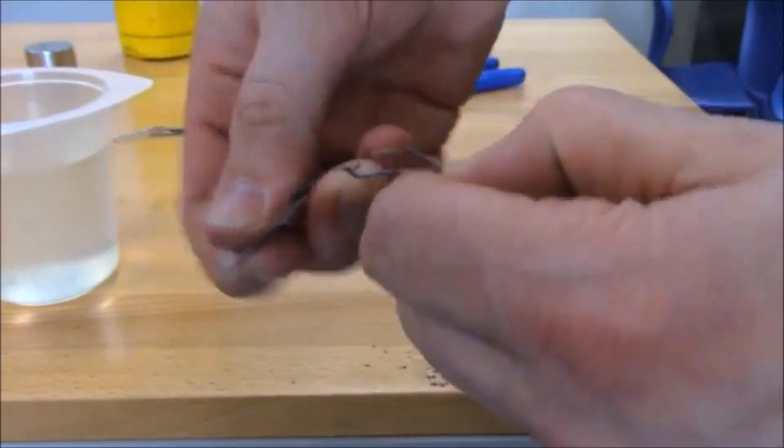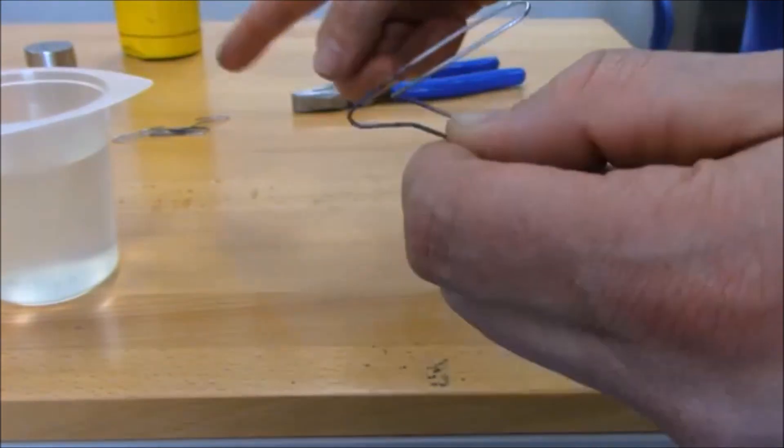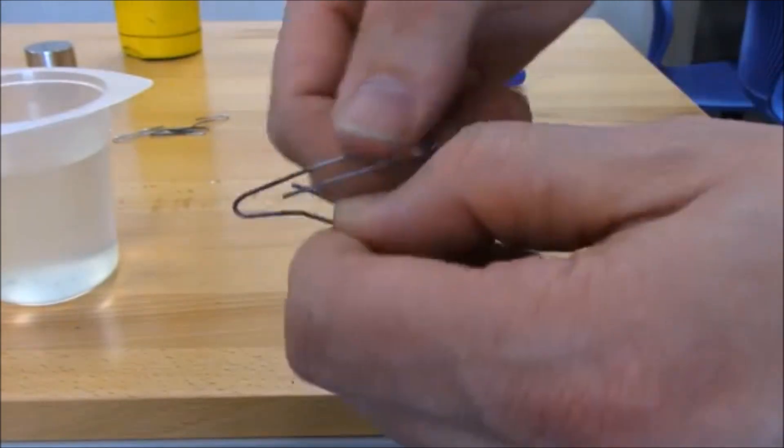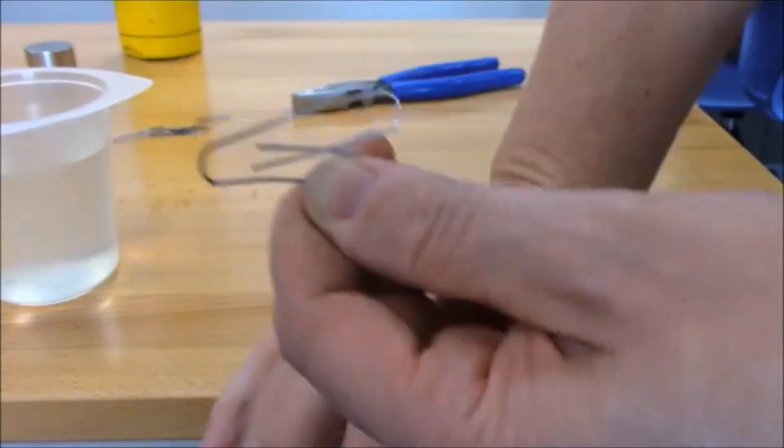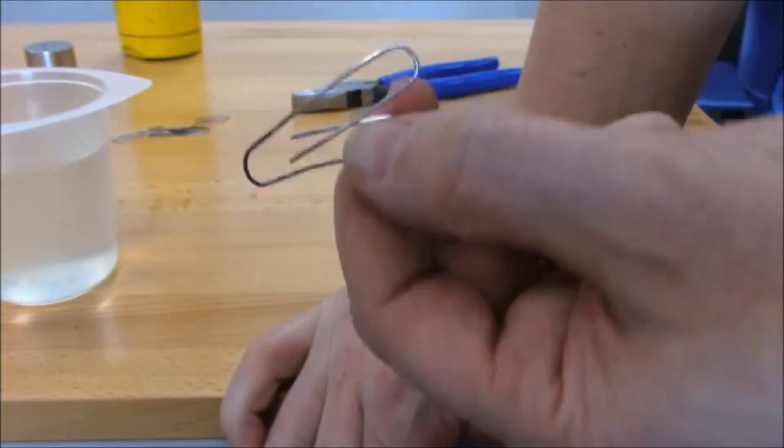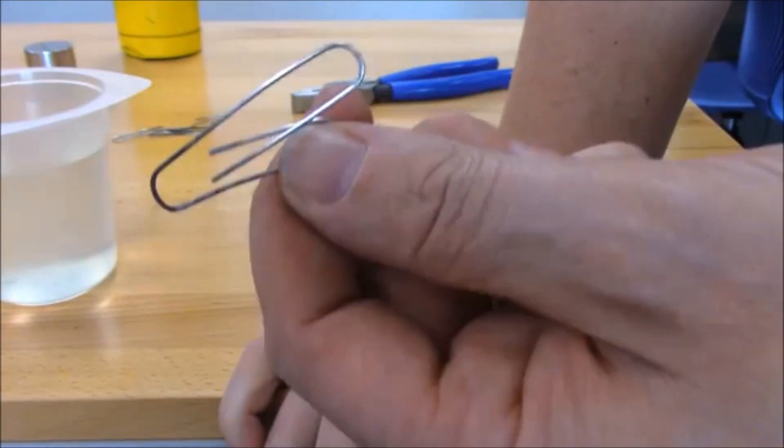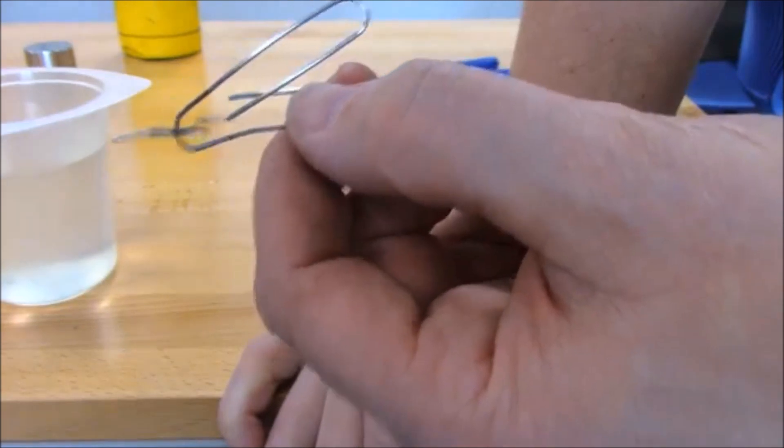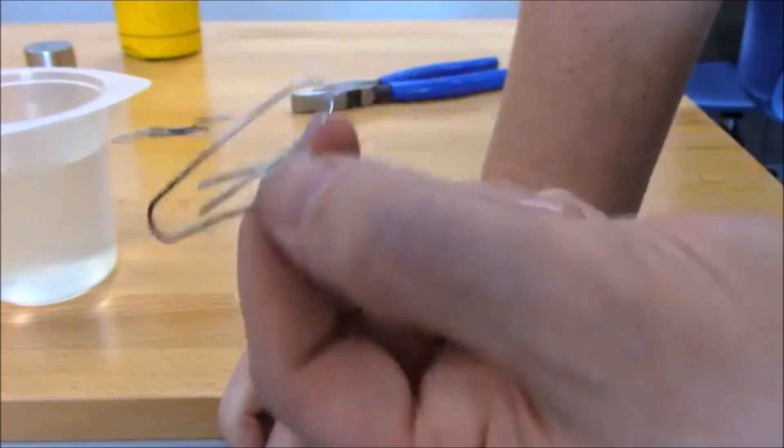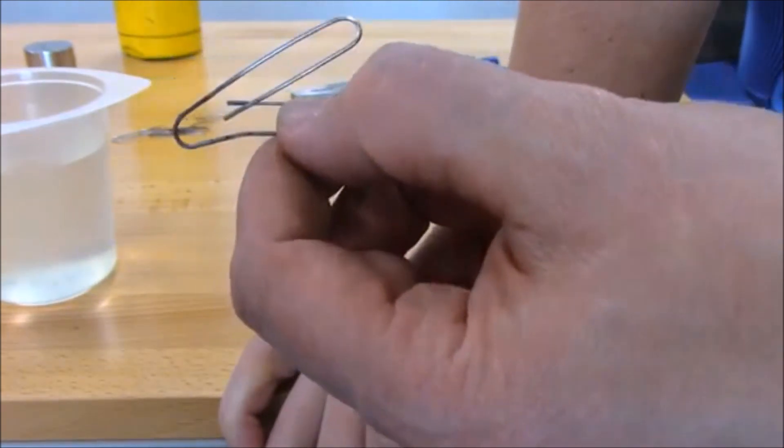But yeah, this one, it's not as soft as that one, and it's not as hard as the other one. And so you can find the perfect—you can fine tune the perfect properties that you want for the material that you're using just by how fast, how hot you get it, and how fast you cool it. And it's really cool how that works.